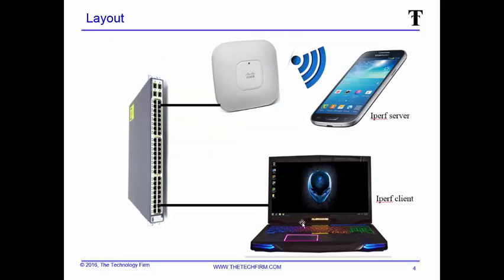A little bit about the layout: the laptop is connected to the switch, connected to the access point, Wi-Fi to the phone. The phone is the server and the laptop is the client. I'm recording things from the access point's perspective because I want to record how well it hears the phone. Chances are the phone will hear the access point fine — the access point probably has a better radio and better antennas. So I'm more concerned about documenting the lowest common denominator, which is the phone.